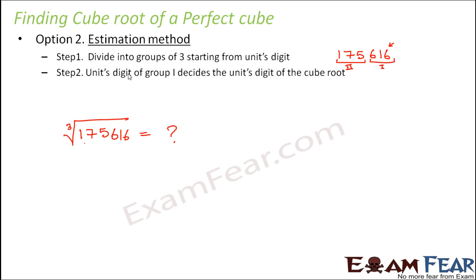Step number 2: units digit of group 1 decides the units digit of the cube root. So in step 2 we focus only on group 1, so here group 1 is 616. Now focus on the units digit of group 1, so units digit is 6. Now for any number whose units digit is 6, the last digit of the cube root would be how much?